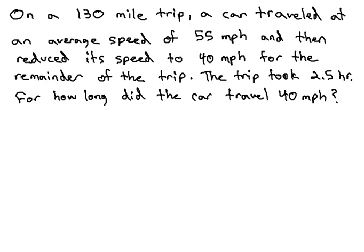On a 130-mile road trip, a car traveled at an average speed of 55 miles per hour, and then reduced its speed to 40 miles per hour for the remainder of the trip. The trip took 2½ hours. For how long did the car travel at 40 miles per hour?